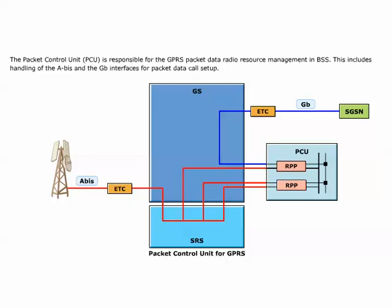The channel control unit software, CCU, is present in the BTS. The PCU connects to the GB devices via GS, and to the ABIS devices via the GS and the SRS. The GPRS traffic is multiplexed with the circuit switched traffic in the sub-rate switch.